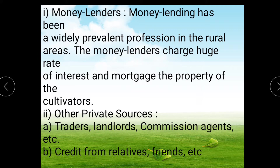Money lenders freely supply credit for productive or non-productive purposes, and also for short-term and long-term requirements of the farmer. The money lender is easily accessible, maintains close and personal contact with the borrower, often having a relationship with the family extending over generations. His methods of business are simple and elastic, he has local knowledge and experience, and can lend against land as well as promissory notes. He also knows how to protect himself against default through legal and illegal methods.